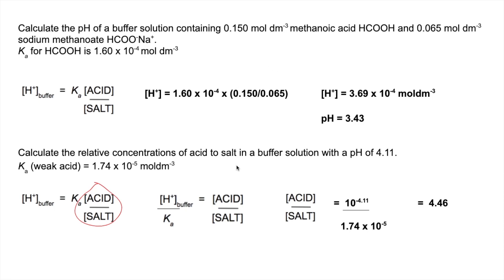So this acid to salt ratio is 4.46, so therefore the acid needs to be 4.46 times the concentration of the salt.